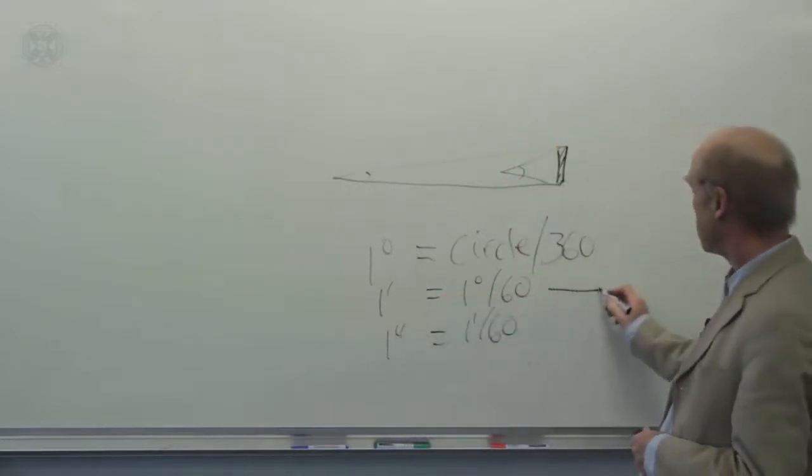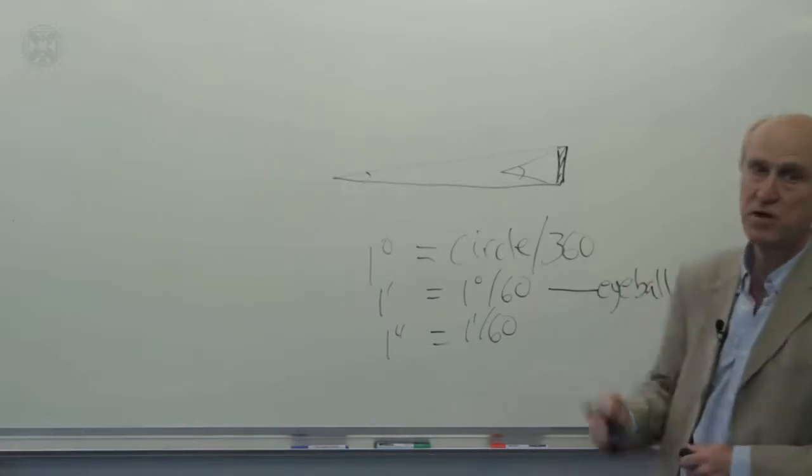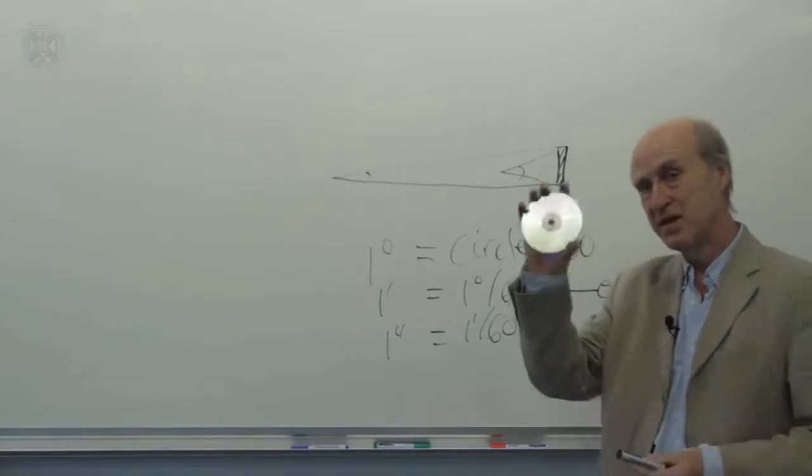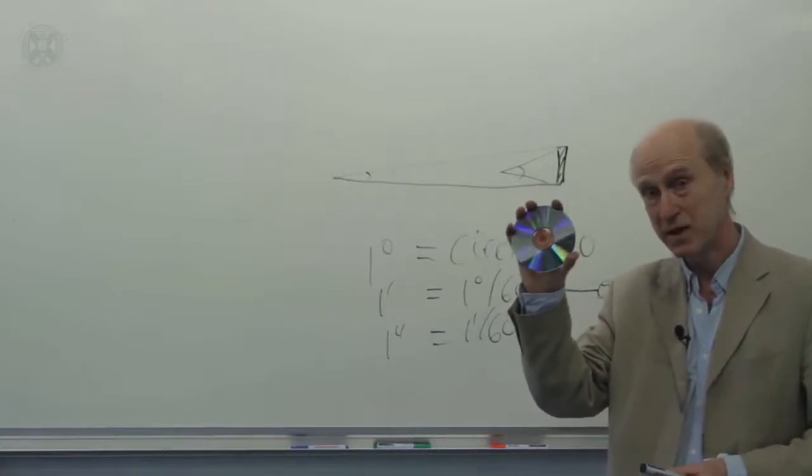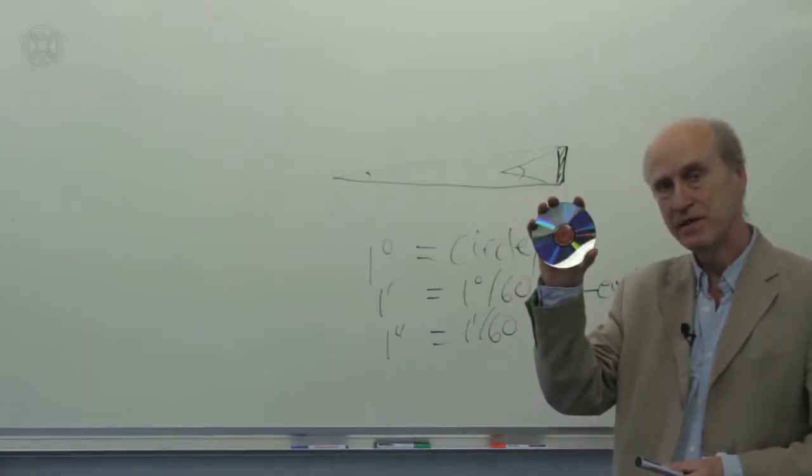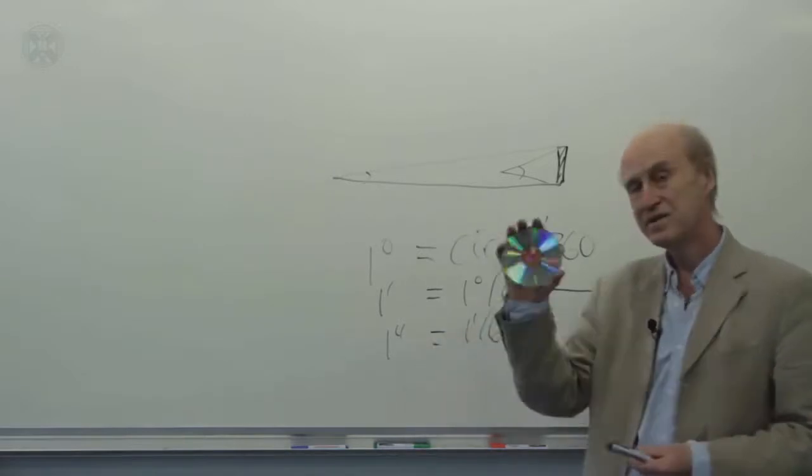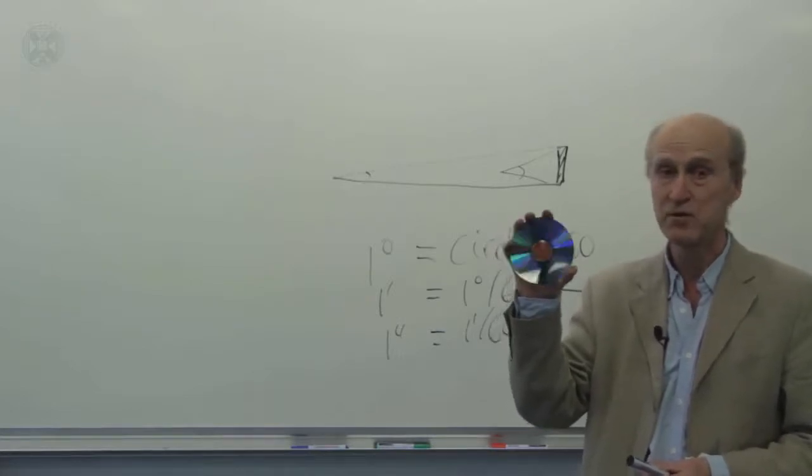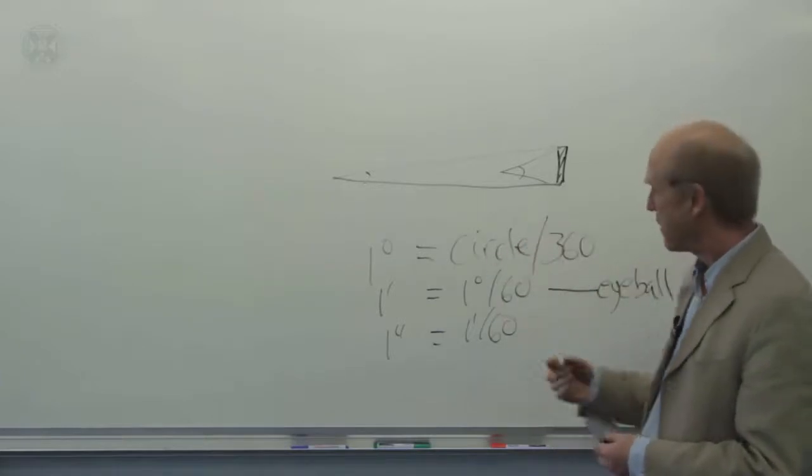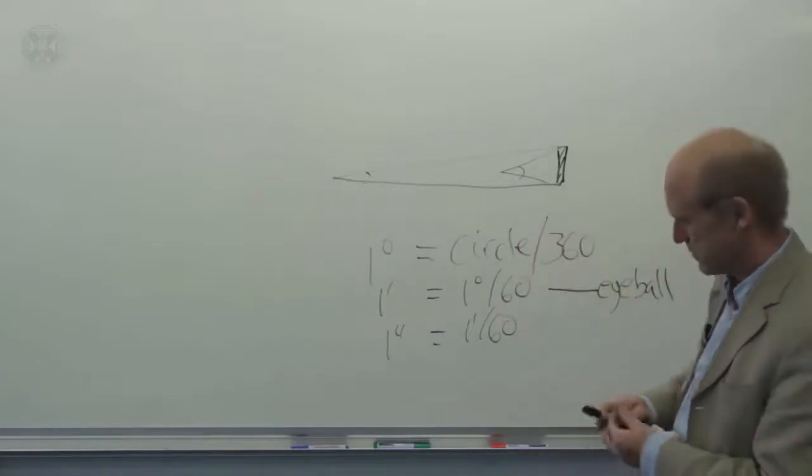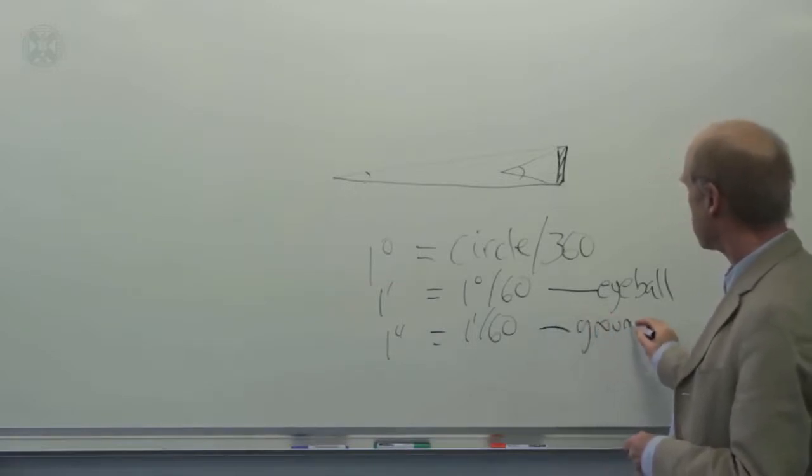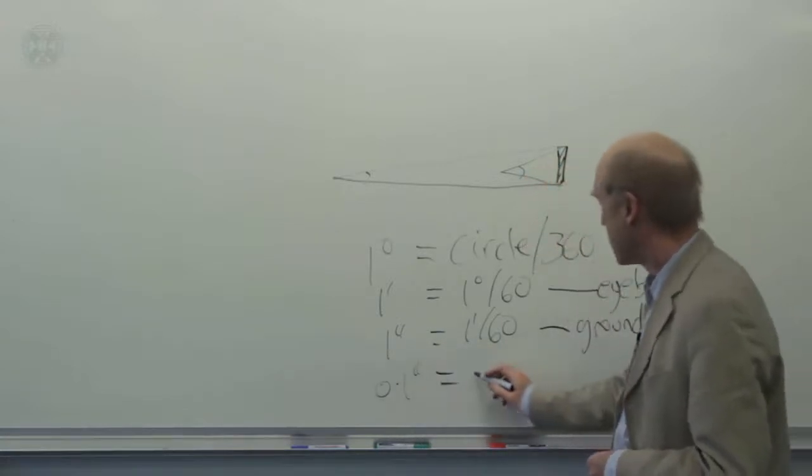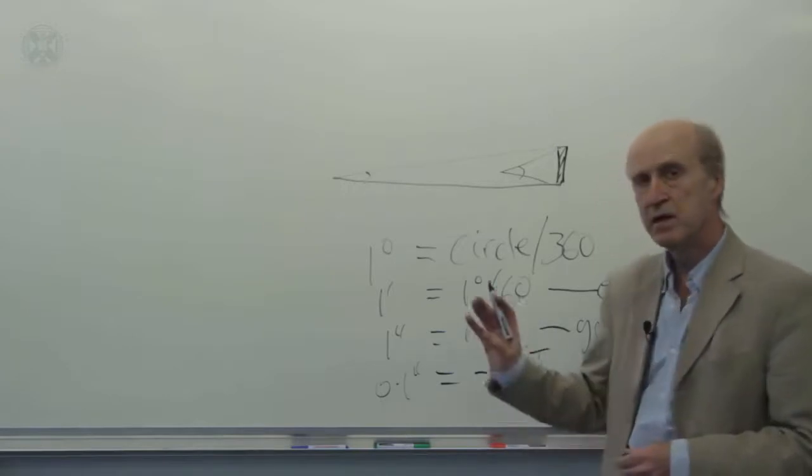Now, one arc minute is about what you can resolve with the human eye. And to put that into perspective, if you imagine taking a DVD like this here and holding it 400 meters away, that's about one arc minute. Now, one arc second is like having this DVD 24 kilometers away. So you can't resolve that with the human eye. But if you're looking through a telescope, you can. And this is about the limit of what you can see with a ground-based telescope. On the other hand, about a tenth of that is what you can get with the Hubble Space Telescope. So this makes an enormous difference.